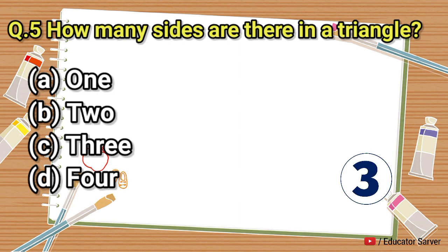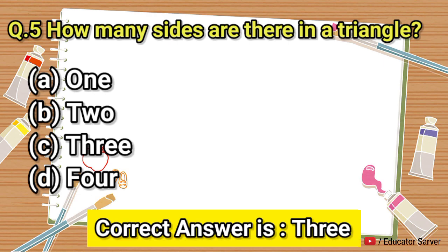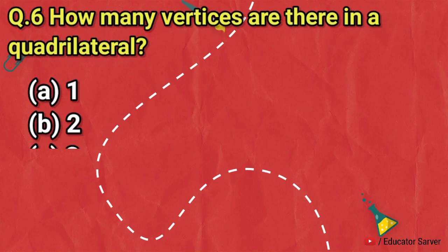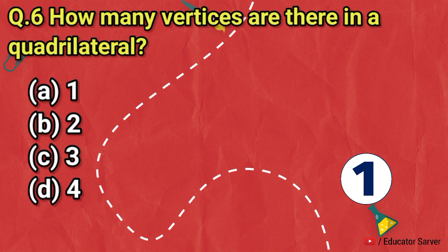Question number five: how many sides are there in a triangle? Options are one, two, three, and four. The right answer is three sides. Question number six: how many vertices are there in a quadrilateral? Options are one, two, three, and four.